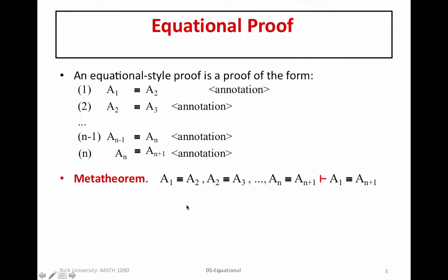The metatheorem that I'm talking about is taking each step of the Hilbert Style Proof as assumption. So if we know a1 is equivalent to a2, a2 is equivalent to a3, and an is equivalent to an plus 1, then we can conclude that a1 is equivalent to an plus 1. And the proof of this is simply to apply the transitive property of equivalence a number of times recursively at each step to conclude that a1 is equivalent to an plus 1.